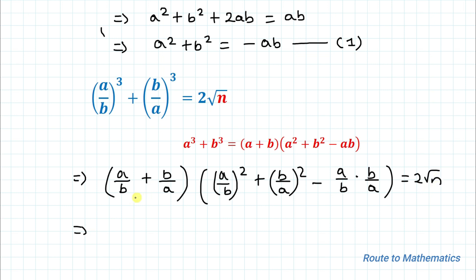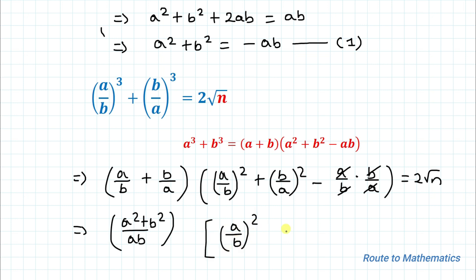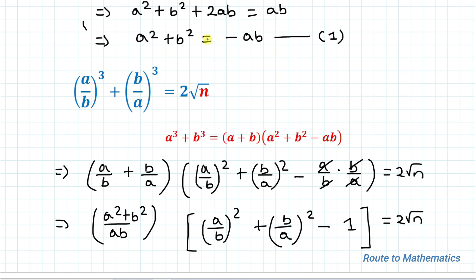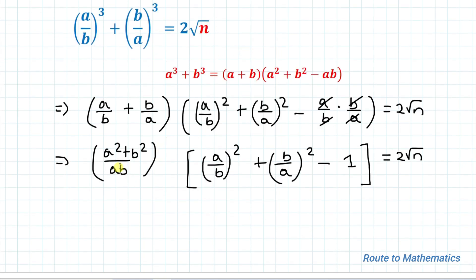After taking LCM, we find that (a/b + b/a) becomes (a² + b²)/ab. The a's and b's cancel out, so we have ((a/b)² + (b/a)² - 1) = 2√n. From equation 1 we already have a² + b² = -ab, so substituting that value here gives -ab divided by ab, which equals -1.